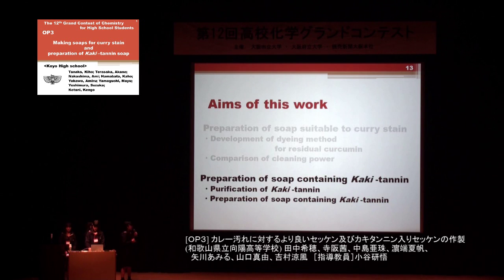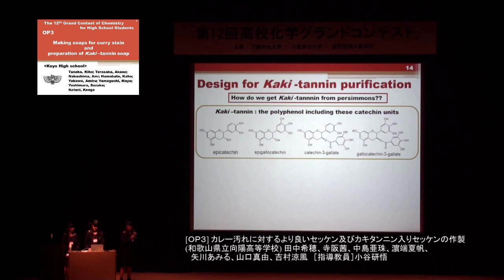Next, we will describe the purification method of kakitanin. The first problem is how to obtain kakitanin from persimmon juice. To solve the problem, we focused on the substructures of kakitanin. Kakitanin consists of four catechin units.